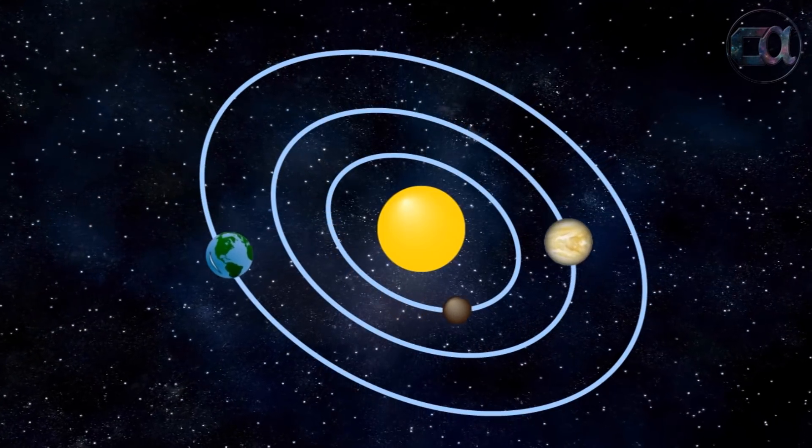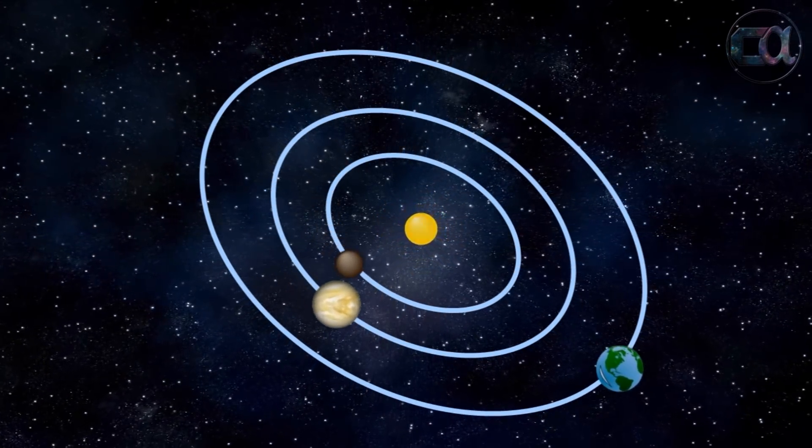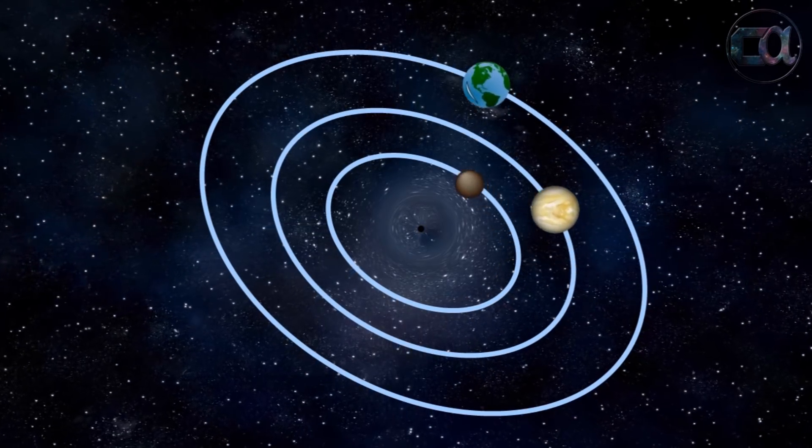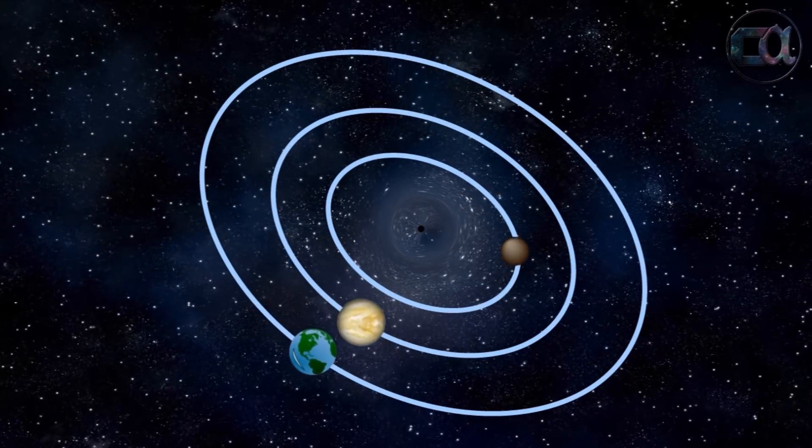So if we suddenly replace our sun with a black hole of same mass, everything else in the solar system will continue to be normal, only it will get very cold.